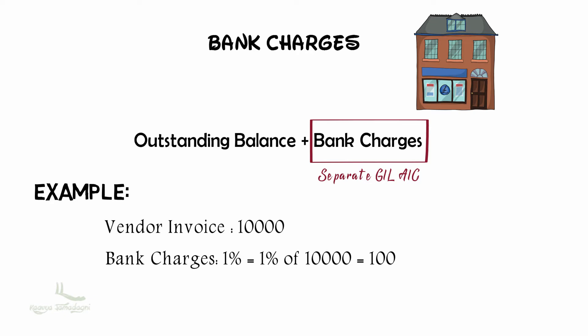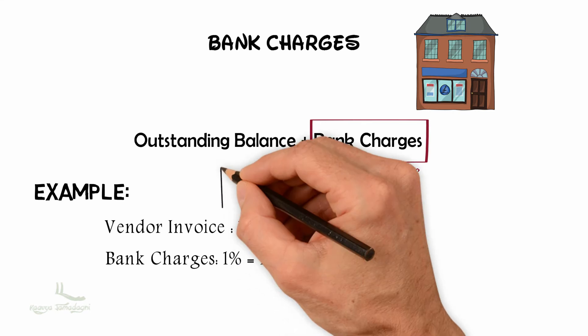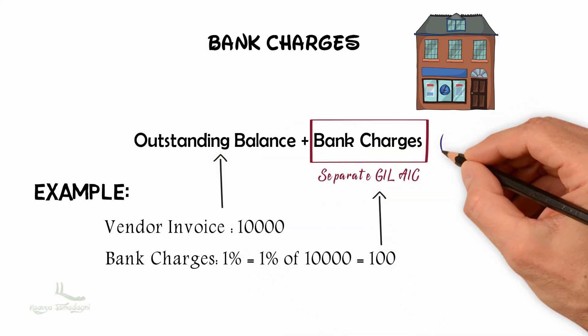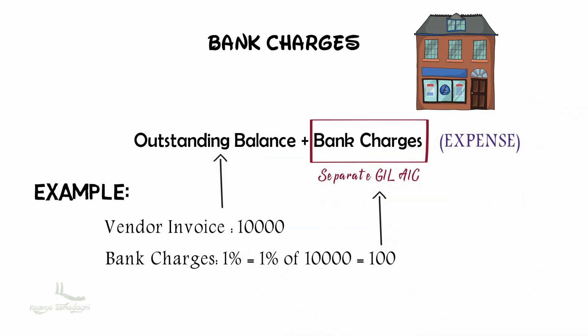When making the outgoing payment, I have to pay ten thousand against the vendor invoice, and apart from that, I have to post another entry of one hundred in a separate GL account, which is an expense. In SAP, we have an option to assign bank charges to a separate GL account, which will be updated automatically at the time of payment.